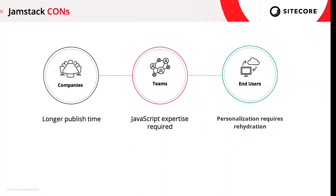As far as JAMstack cons, build time rendering can be seen as a drawback since it increases the time needed to publish a new version of the app. Additionally, the level of JavaScript expertise needed to implement JAMstack apps can also be seen as a drawback for teams who are new to it. I think the most significant con is the lack of personalization for end users, since pre-rendered markup cannot be user aware. Fortunately, frameworks like Next.js are enabling hybrid approaches — pre-rendering for pages where user context is not needed, and server-side rendering for pages that do.